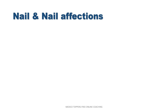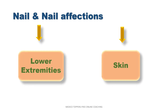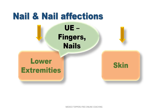Next, nail and nail affections. Nail rubrics are given under extremities nowadays, and nail affections are given under skin. Nail rubrics are also given under upper extremities, but there is a sub-rubric — the finger rubric. So it is a sub-rubric in upper extremities but a main rubric in lower extremities.